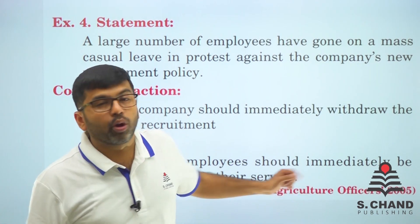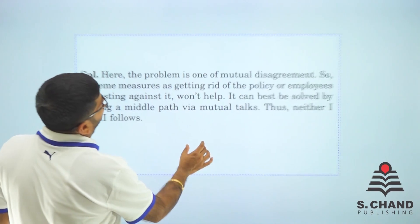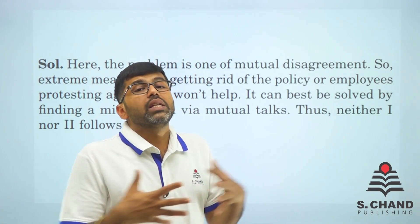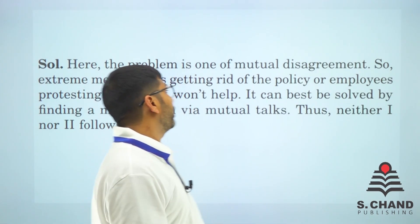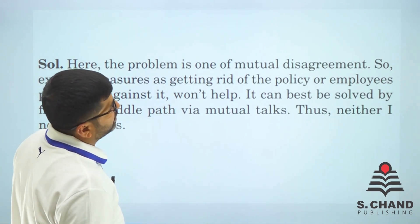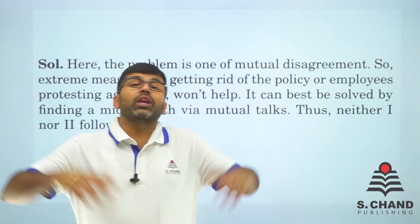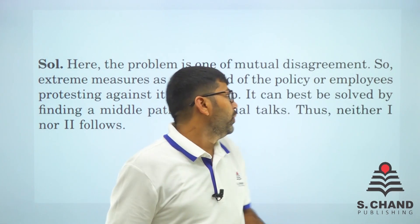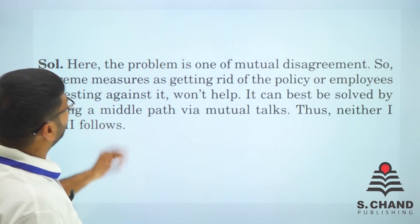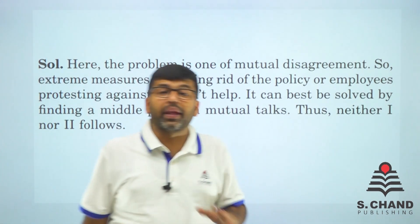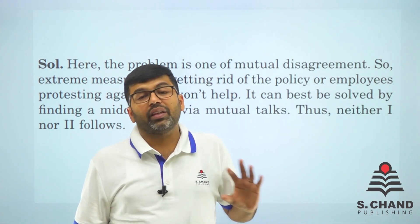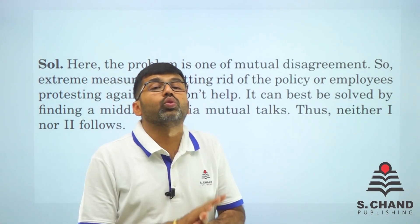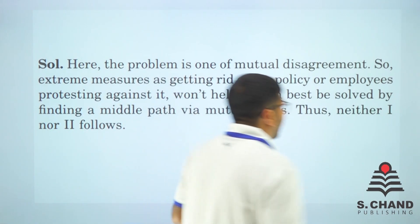The book's answer explains: the problem is one of mutual disagreement between two parties who can't reach a compromise. Taking extreme measures — either getting rid of the policy or suspending the employees — won't help. It can best be solved by finding a middle path via mutual talks. So both actions are wrong.